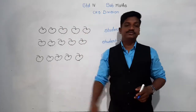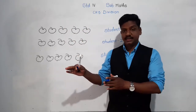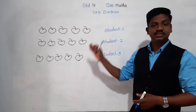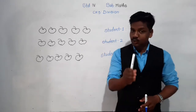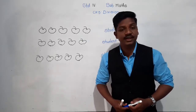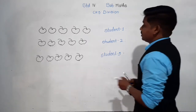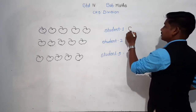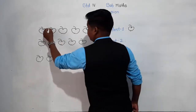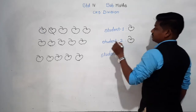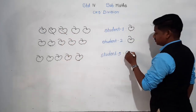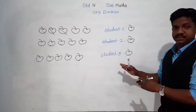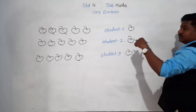We have to divide these 15 apples among three students equally. Each student must get an equal number of apples. So let's do it. First apple I take from here and give to the first student. Second apple I give to the second student. Third apple I give to the third student — because each student should get equal apples. First round is over.